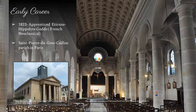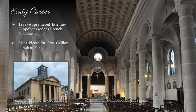During his early career, he initially apprenticed after his second-place prize-winning for the initial Prix de Rome. Then in 1823 he apprenticed with Étienne-Hippolyte Godde, a French neoclassical architect, where they created the building seen in the backdrop, which is the St. Pierre de Gros Caillou Parish in Paris.